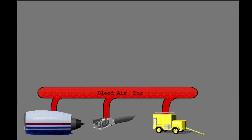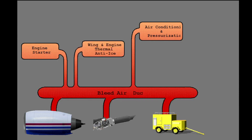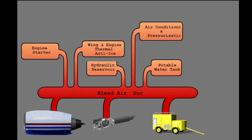The components and systems that use bleed air are the engine starter, the air conditioning packs and pressurization system, wing and engine thermal anti-icing, pressurization for the potable water tank, and pressurization for the hydraulic reservoirs.